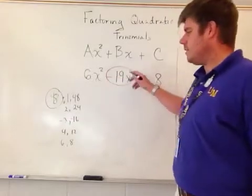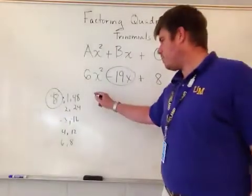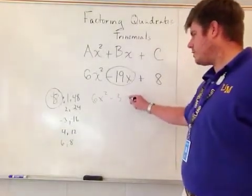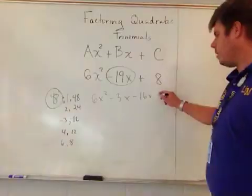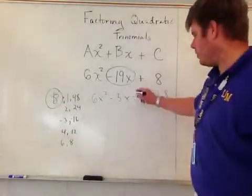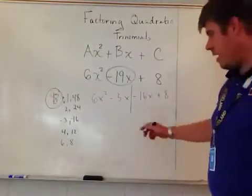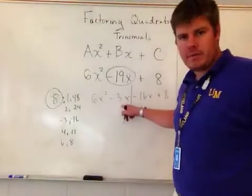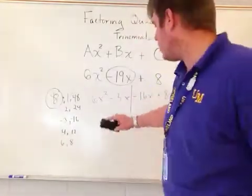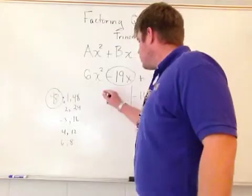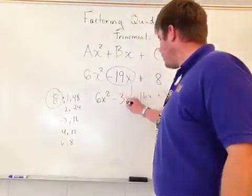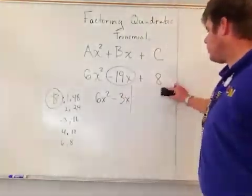From here, I separate this into those two things: 6x² - 3x - 16x + 8. Then I factor by grouping where I split it down the middle.